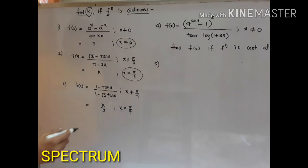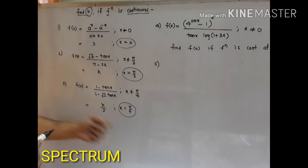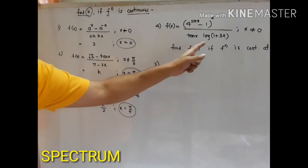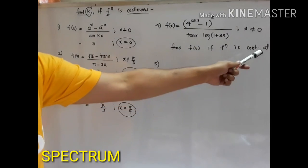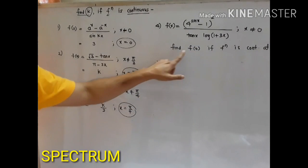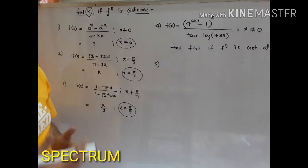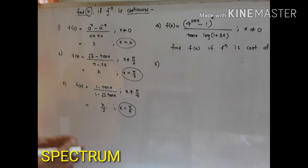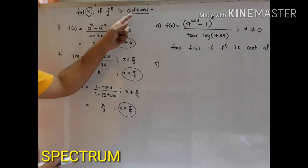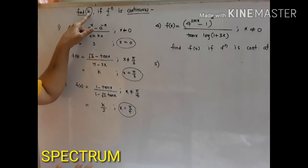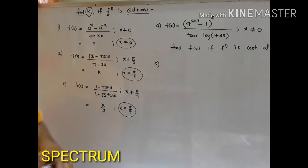The third one: the function is continuous at x equal to pi by 4 and they are asking us to get the value of k, or the value of f(0). This is the second variety of questions, which are very very important, where the given function is continuous and you are asked to find the value of some unknown or the value of the function at the point of continuity.